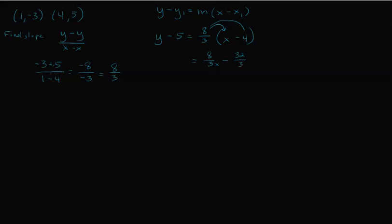So we have y minus five equals (8/3)x minus 32/3. Never turn the slope into a mixed number — keep it as an improper fraction. Now convert 32/3 to a mixed number: that's 10 and two thirds. Add five to both sides to get y by itself: y equals (8/3)x minus five and two thirds. That's our answer.